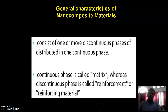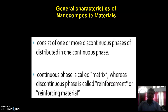What are the characteristics of nanocomposite materials? The nanocomposite material consists of one or more discontinuous phases distributed in one continuous phase. The nanocomposite material is called reinforcement or reinforcing material.